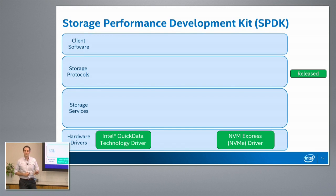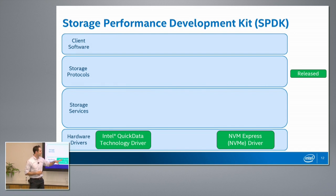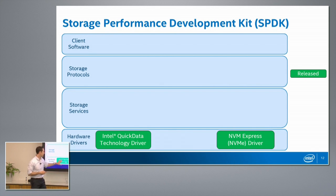At the bottom level, we have Quick Data Technology — a marketing phrase for Crystal Beach DMA, a DMA engine built into the Xeon platforms that lets you offload the movement of data. We also have an NVMe driver. NVMe is something you normally use from the kernel via system calls. We don't do that in SPDK at all. We unbind it from the kernel at startup and bind the hardware queues to our user-space driver. From then on, you're directly accessing that media without going into the kernel.